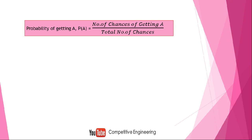Probability is nothing but chance. So instead of saying 'there is more chance,' we specify it with some fraction, some value. Let A be anything — let it be a red ball, let it be passing an exam. The probability of getting A is the number of chances of getting A divided by the total number of chances.